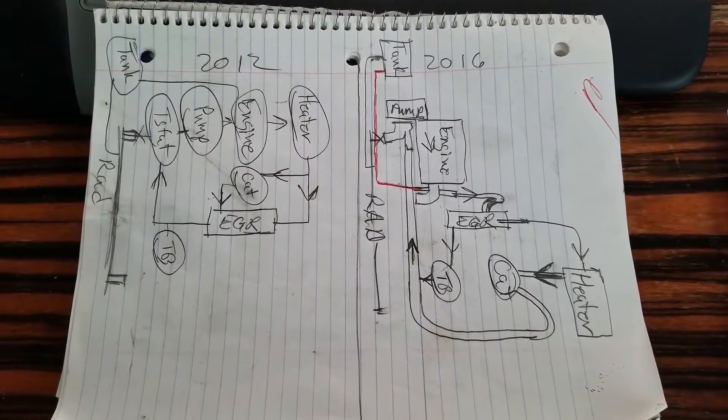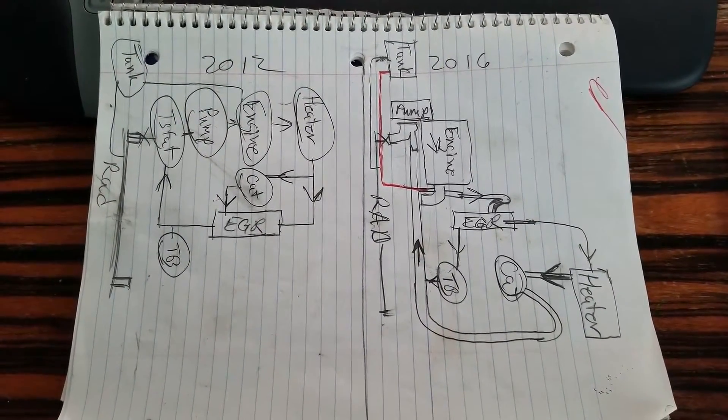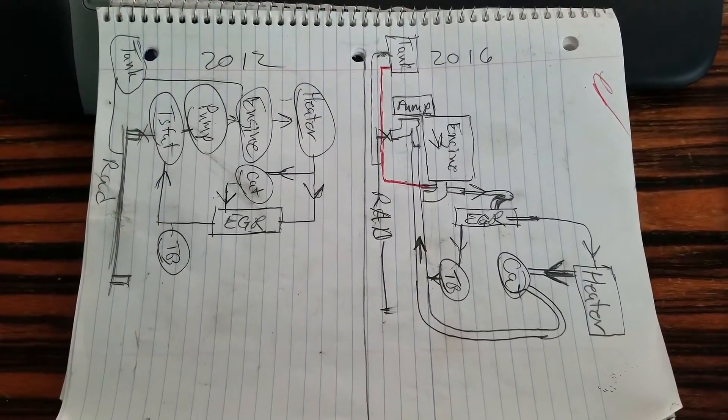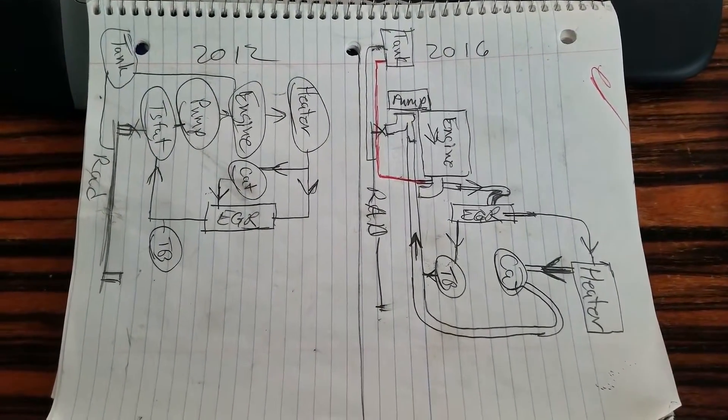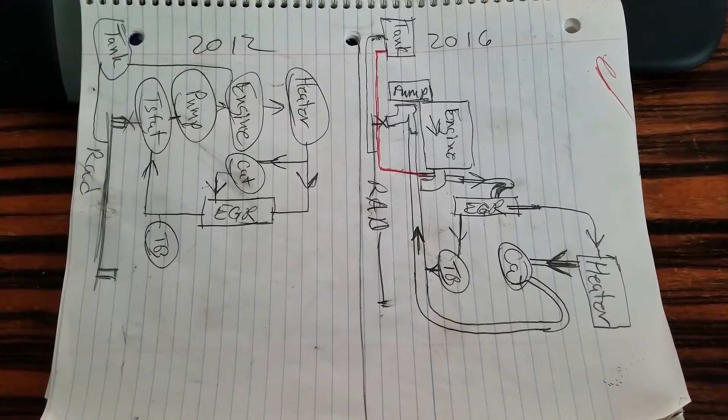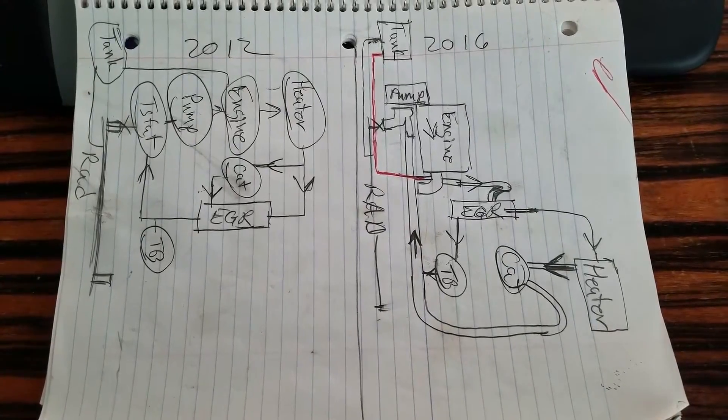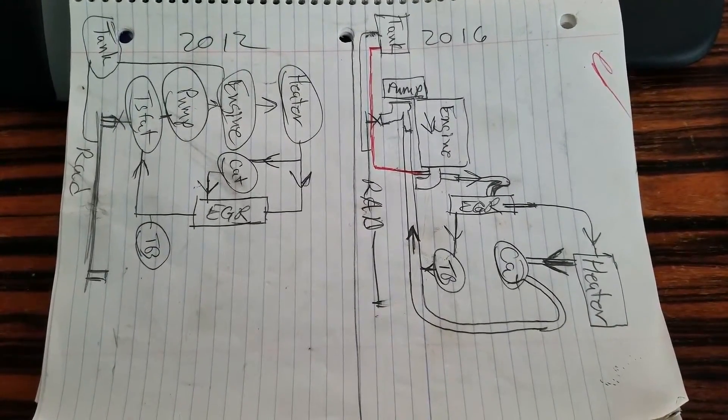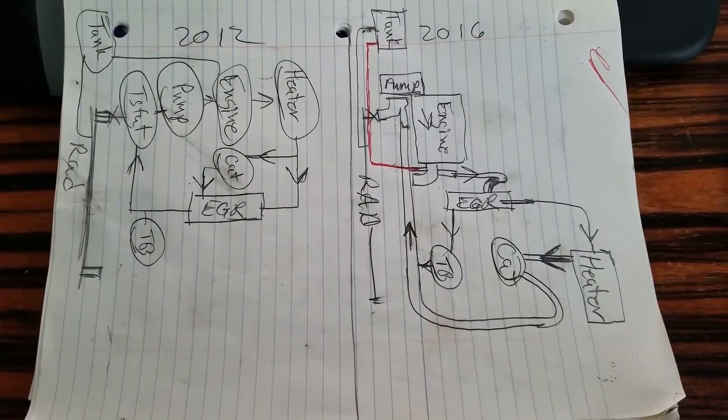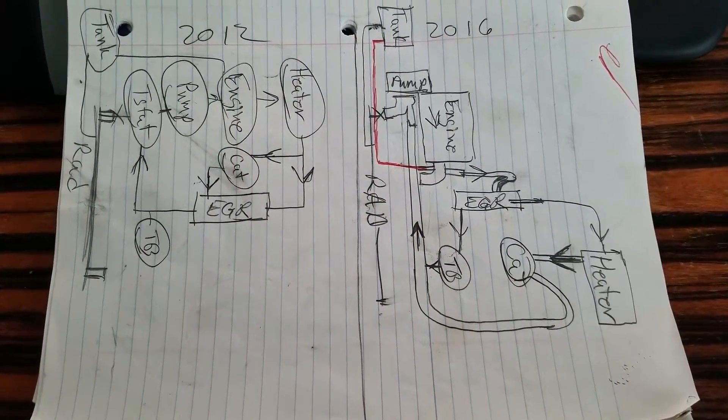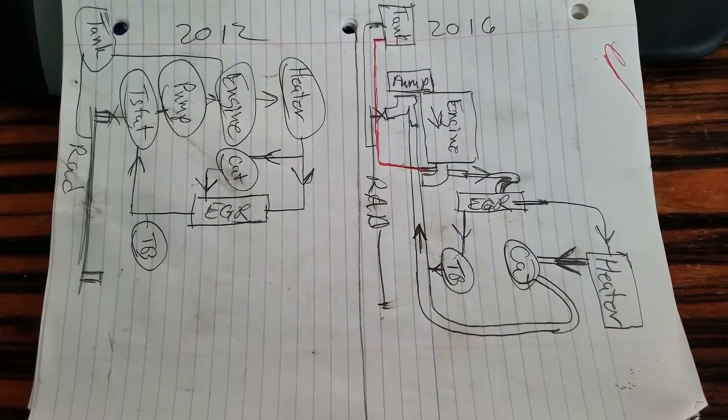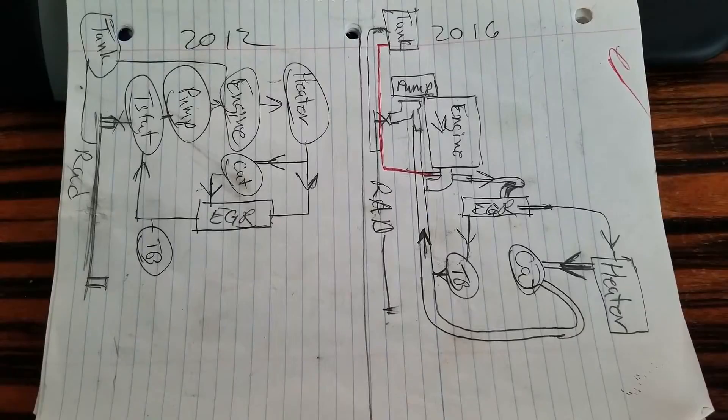Okay, as promised, here's my first diagram comparing the 2012 Prius V and the 2016 Prius engine. The 2012 clearly shows a flow diagram. It's accurate but it's not really the hoses and connections and stuff. It just shows you which way the flow is.